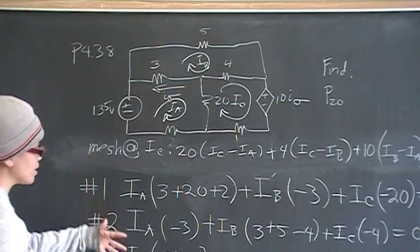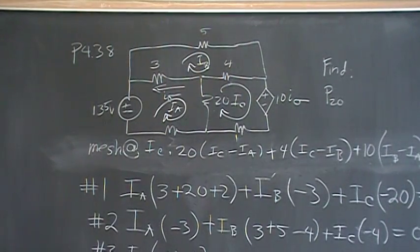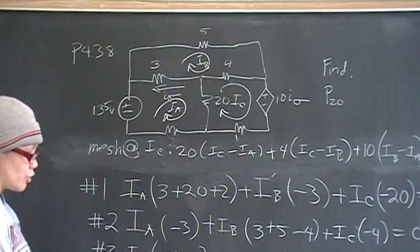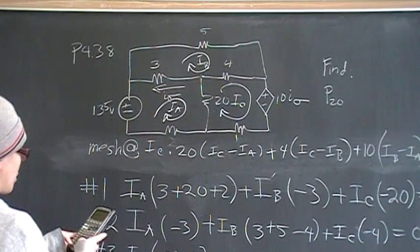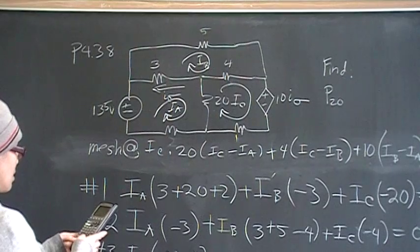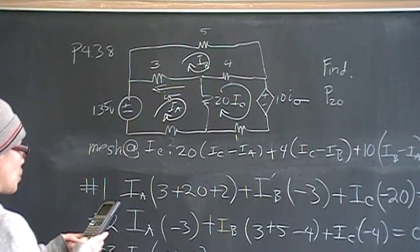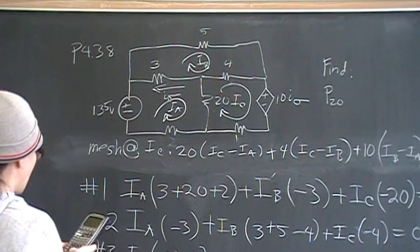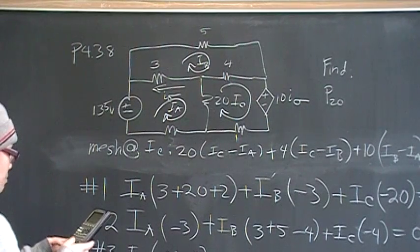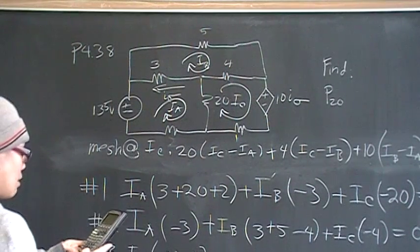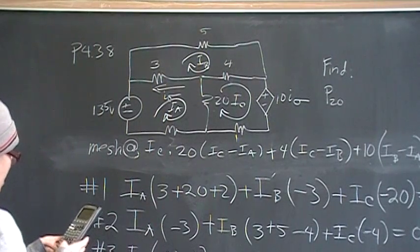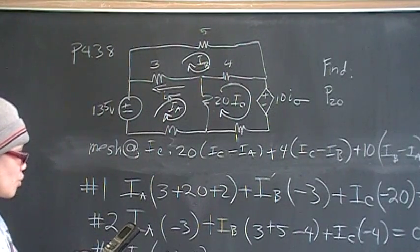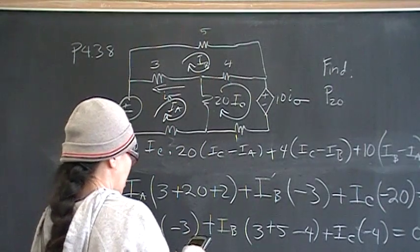So now we have a system of three simultaneous equations, three equations, and three unknowns. So use your simultaneous equation solver. Choose three equations, three unknowns, and then put in your coefficients. 3 plus 20, 3 plus 20, 3 plus 20, plus 2, negative 3, negative 20, is equal to 135. And then negative 3, 3 plus 5, minus 4, negative 4, 0, negative 20, minus 10, negative 4, plus 10, 20, plus 4, plus 1, equals 0. So I'll solve.